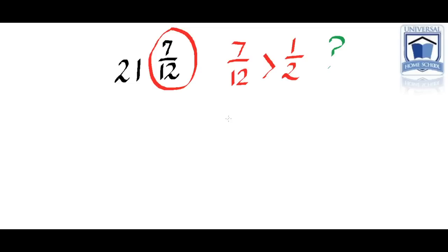Well 7 over 12, 6 over 12 would be 6 over 12. 6 over 12 is equivalent to 1 over 2.